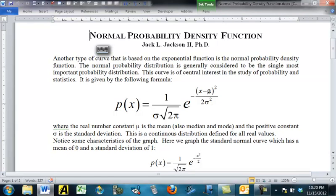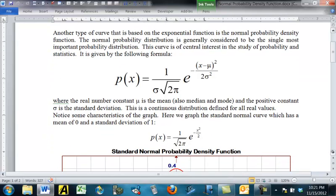It looks like this, where these Greek letters mu and sigma are constants. Of course, pi is our normal constant pi, and E is our normal constant E, those irrational, naturally occurring numbers E and pi that we've been talking about.